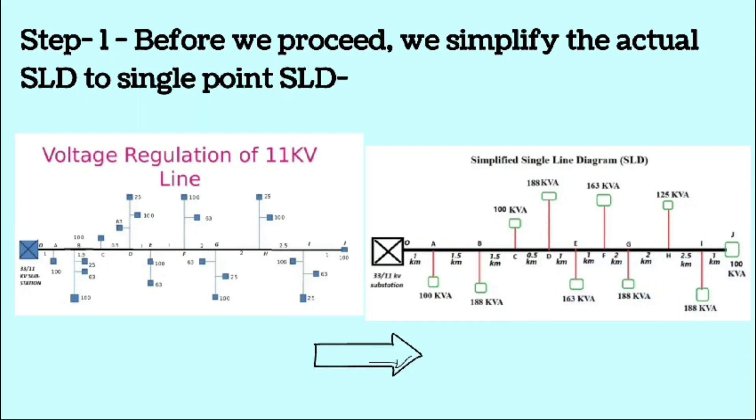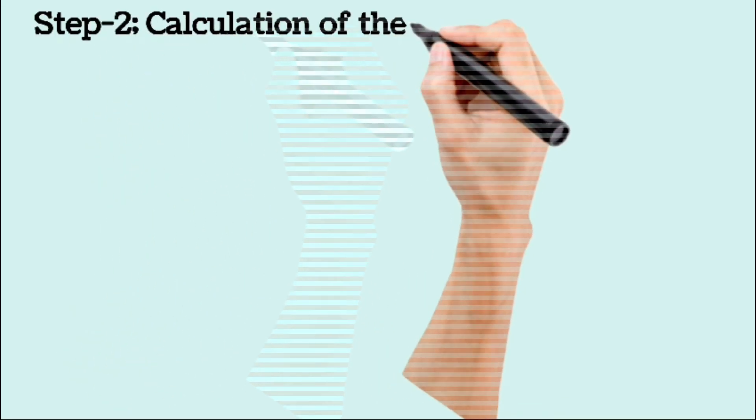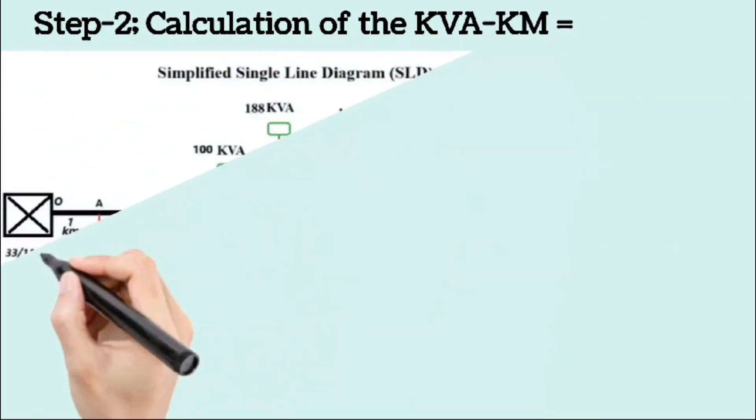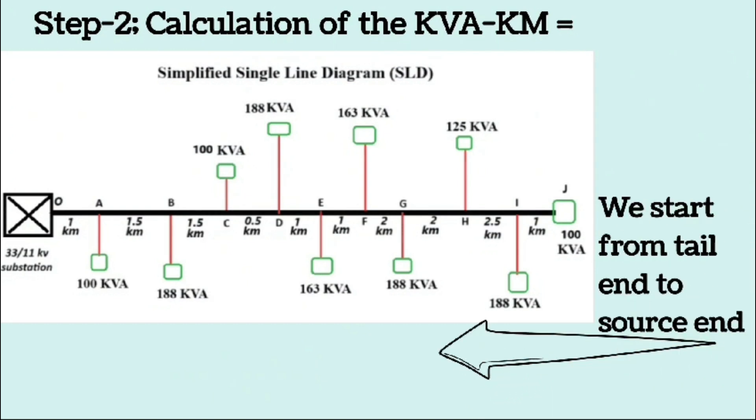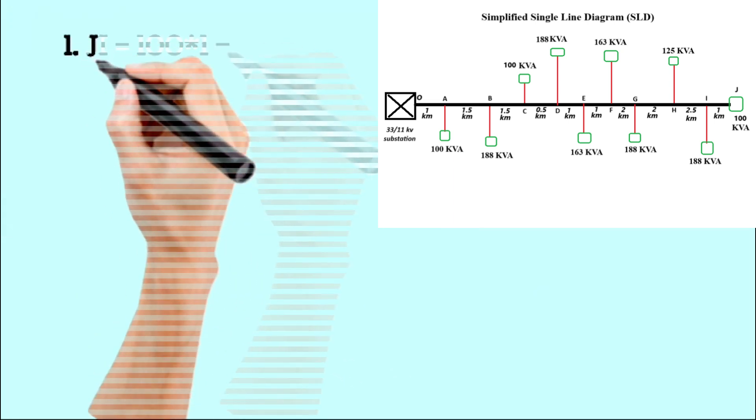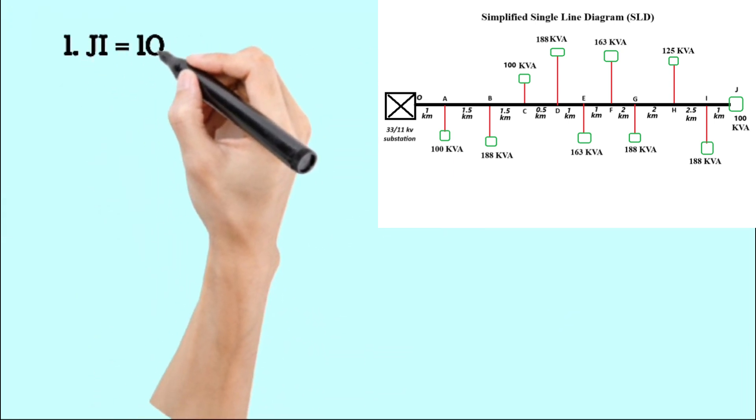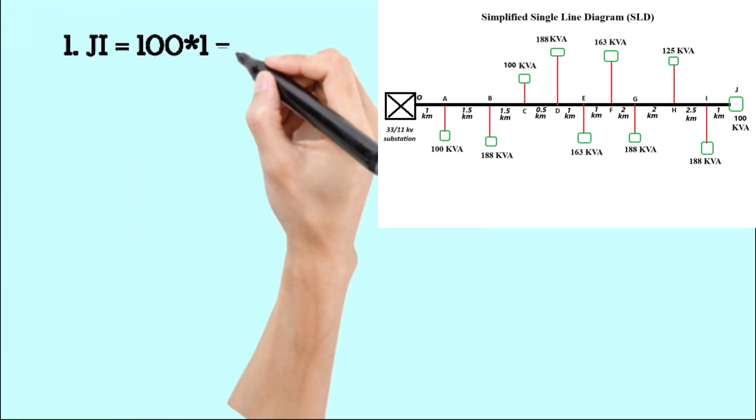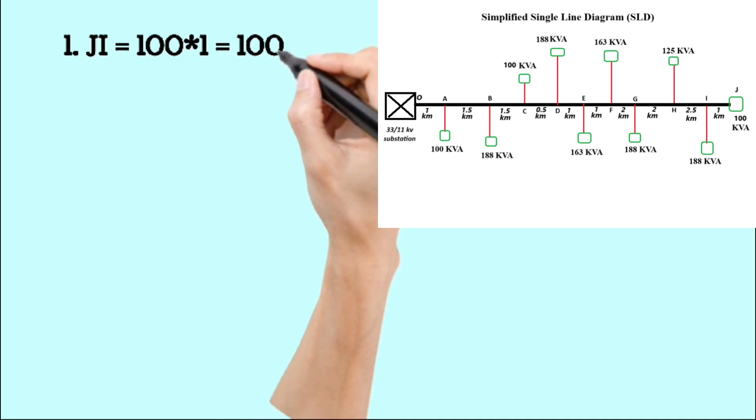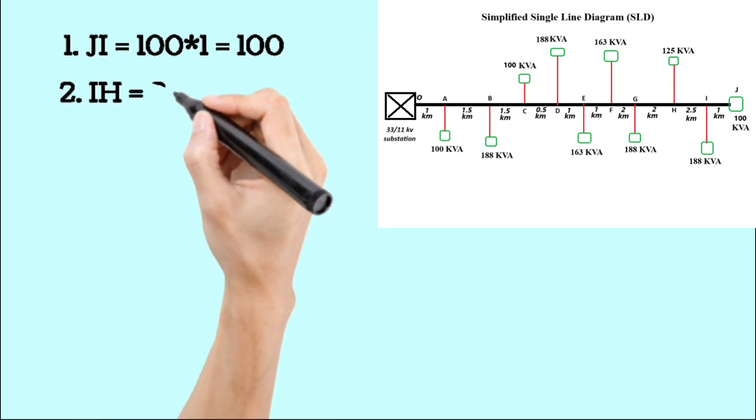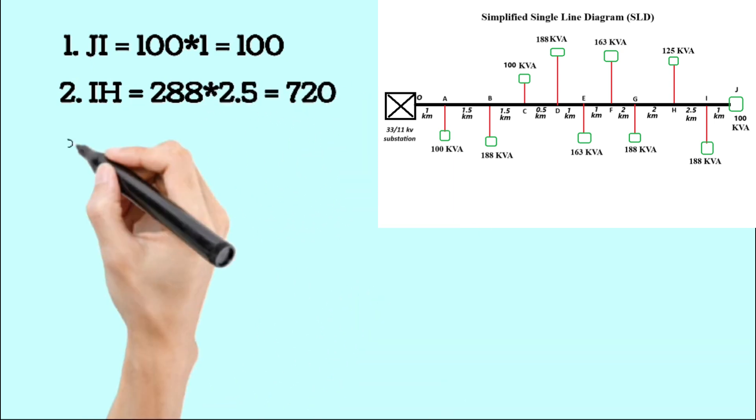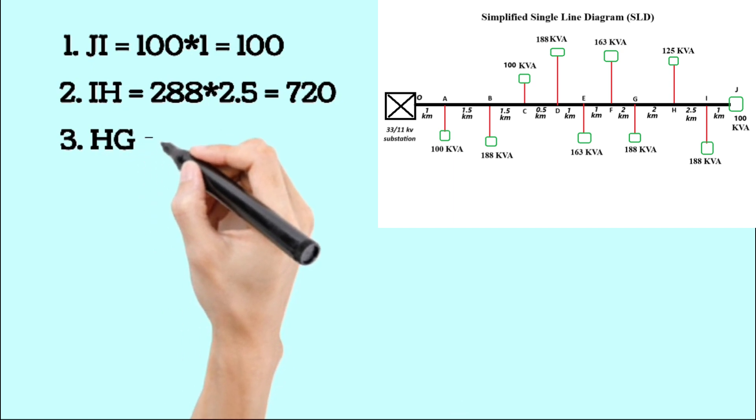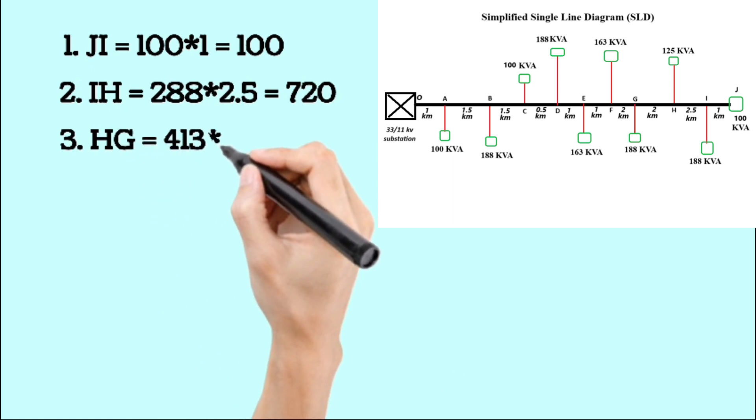Now in step one, we calculate the kVA kilometer from the single line diagram, and this we will calculate from tail end to source end. Let's calculate the total kVA kilometers step by step from tail end to source end. For segment JI: 100 multiplied by 1 equals 100. For segment IH: 288 multiplied by 2.5 equals 720. For segment HG: 413 multiplied by 2 equals 538. For segment GF: 601 multiplied by 2 equals 1202.